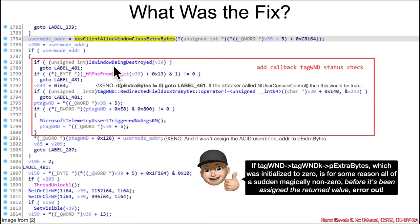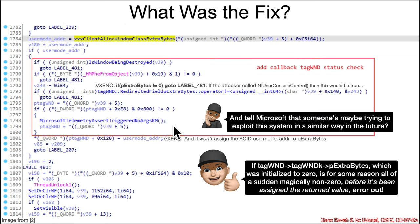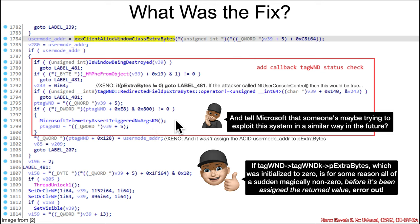By jumping to label 481, you completely skip the assignment — so there's no assignment of ACID to pExtraBytes. That's the core fix. Basically it says: if this thing was initialized to zero and I called into user space and came back and it's not equal to zero without me having assigned it — that seems bad, so error out. Then there's another extra change: a call to a Microsoft telemetry function — MicrosoftTelemetryAssertTriggeredNoArgsKM — saying if bit 11 is set in dwExtraFlags, that's also suspicious.